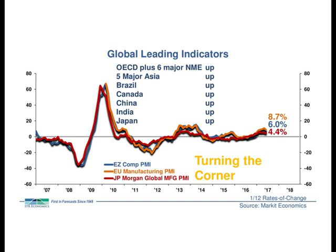Zooming out to global trends: OECD plus 6 national leading indicators — covering major industrialized nations including Brazil, Canada, China, India, Japan — are all up, showing 6 to 12 months of positive momentum. PMIs, which look further out, are also up but turning that corner just like we expect in the U.S. PMI — suggesting that the slower growth trend in 2018 and recessionary pressures brewing in 2019 will be a global event. Mild, nothing to be overtly concerned about, but global in nature.